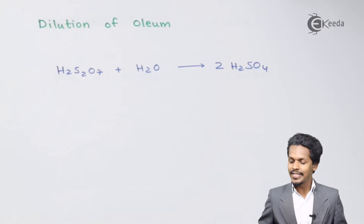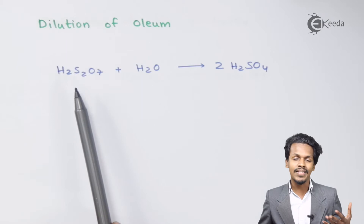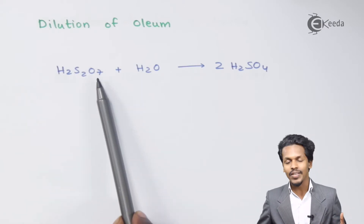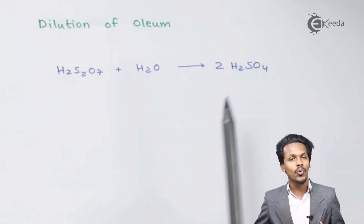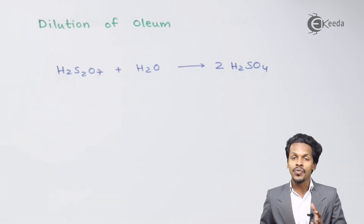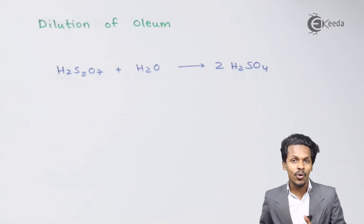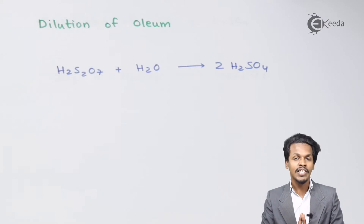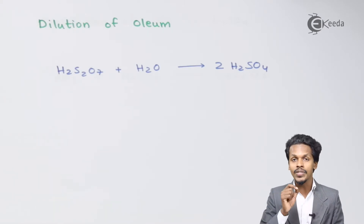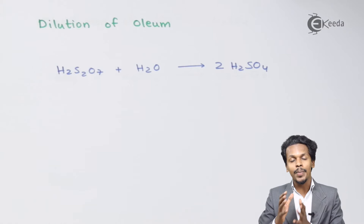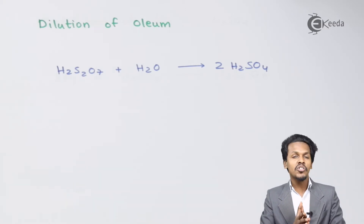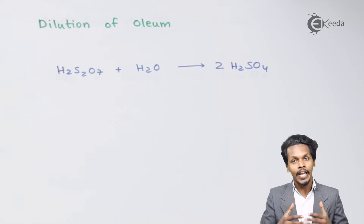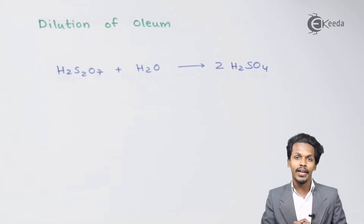The last step is the dilution of Oleum. The Oleum (H₂S₂O₇) produced in step 3 is dissolved in H₂O to obtain 2 moles of H₂SO₄. This H₂SO₄ is around 98% pure, which is why the Contact Process is the most important industrial process for preparing Sulfuric Acid. A flow diagram is also provided to make this easier to understand.